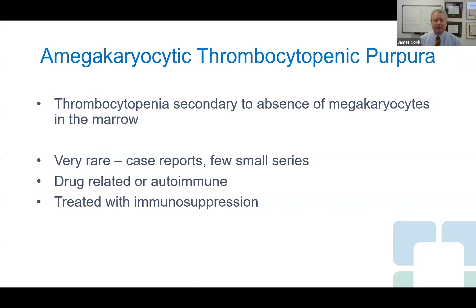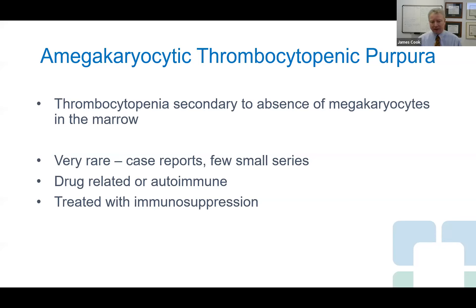The final example of the uni-lineage disorders is called amegakaryocytic thrombocytopenic purpura, which translates to low platelets because you're not making platelets in the bone marrow. In the peripheral blood smear, very few platelets are present, and bone marrow biopsy shows absence of megakaryocytes. This is extremely rare — the least common of all the conditions discussed today. It is not very well characterized but is thought to be either an autoimmune process or a drug reaction, and is typically treated with immunosuppressive therapies.